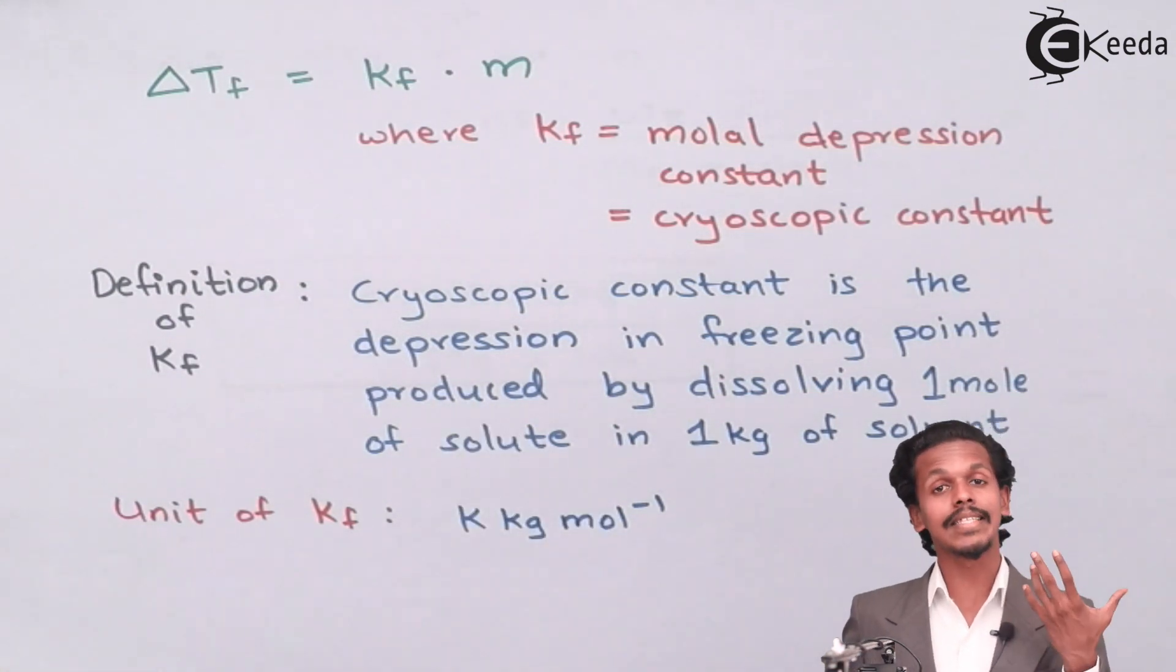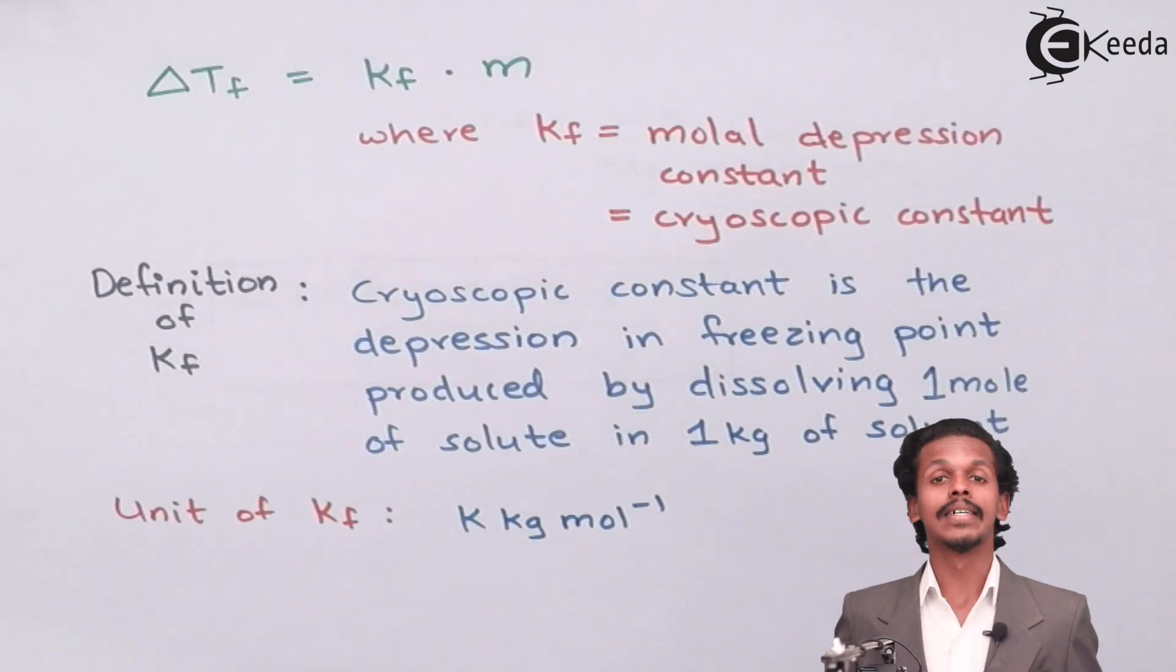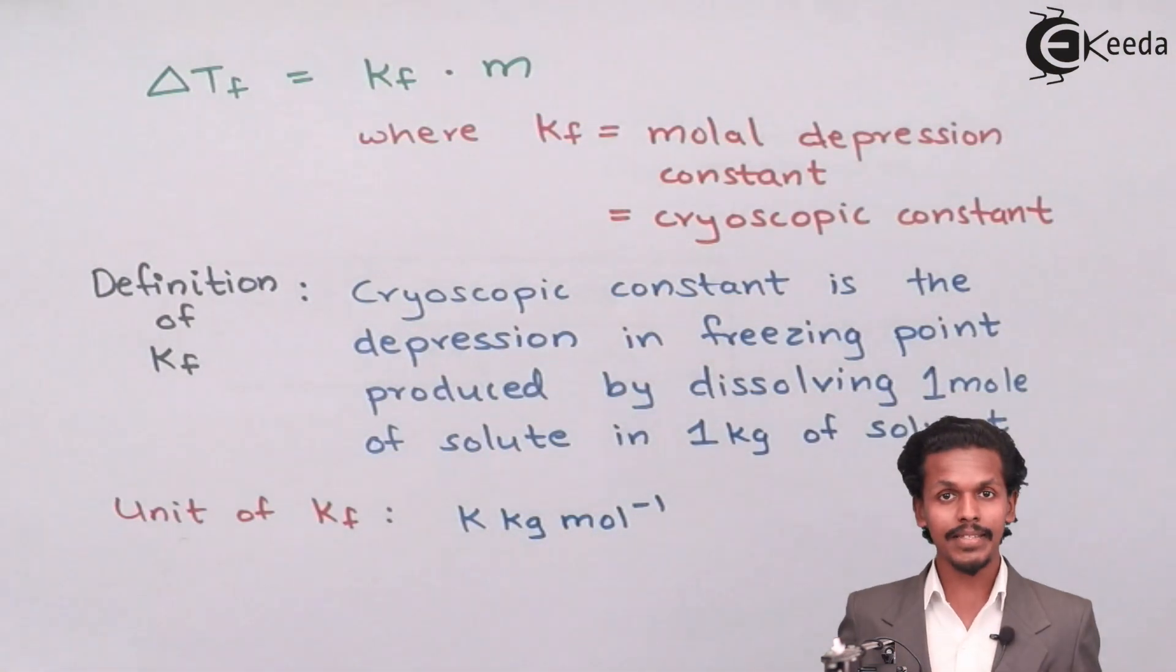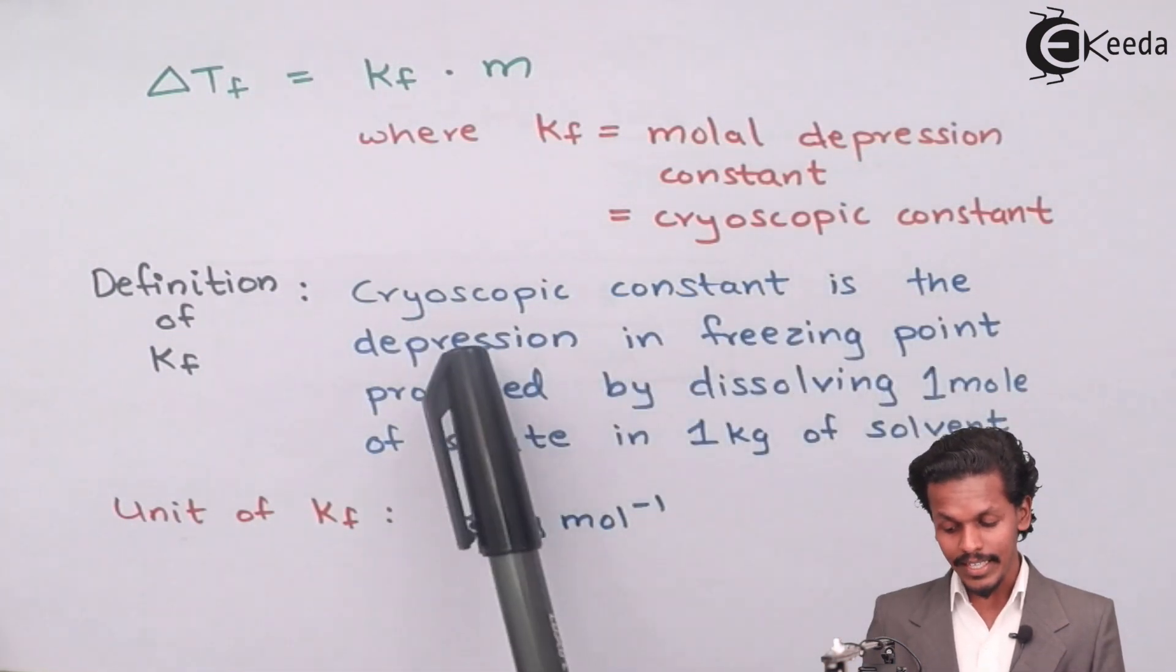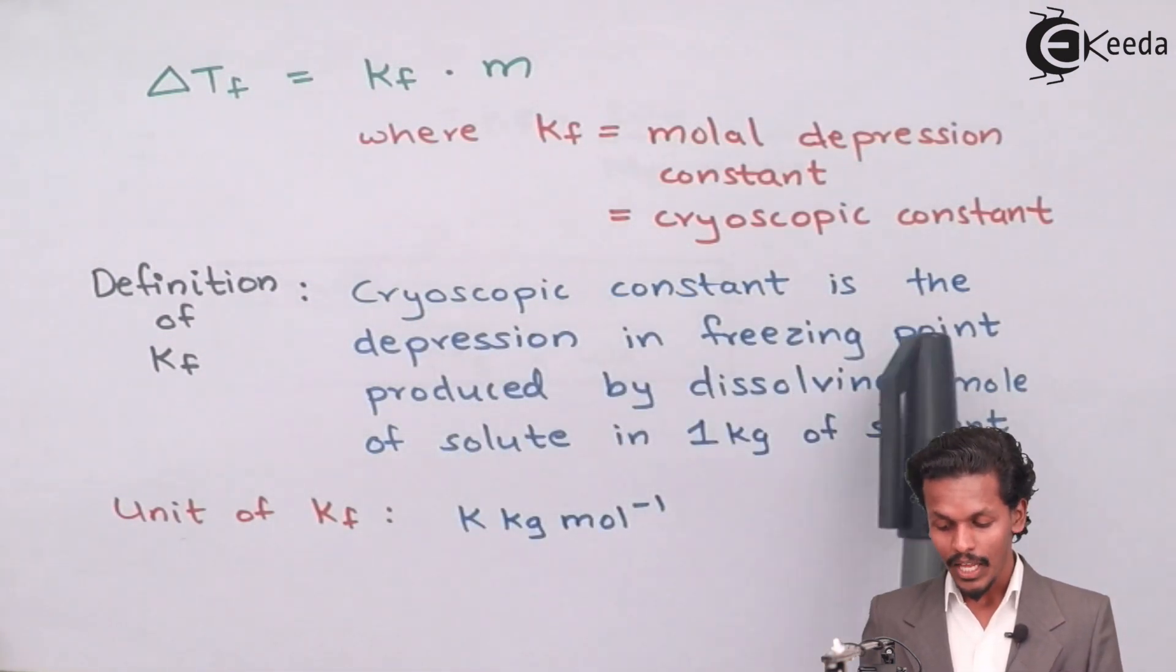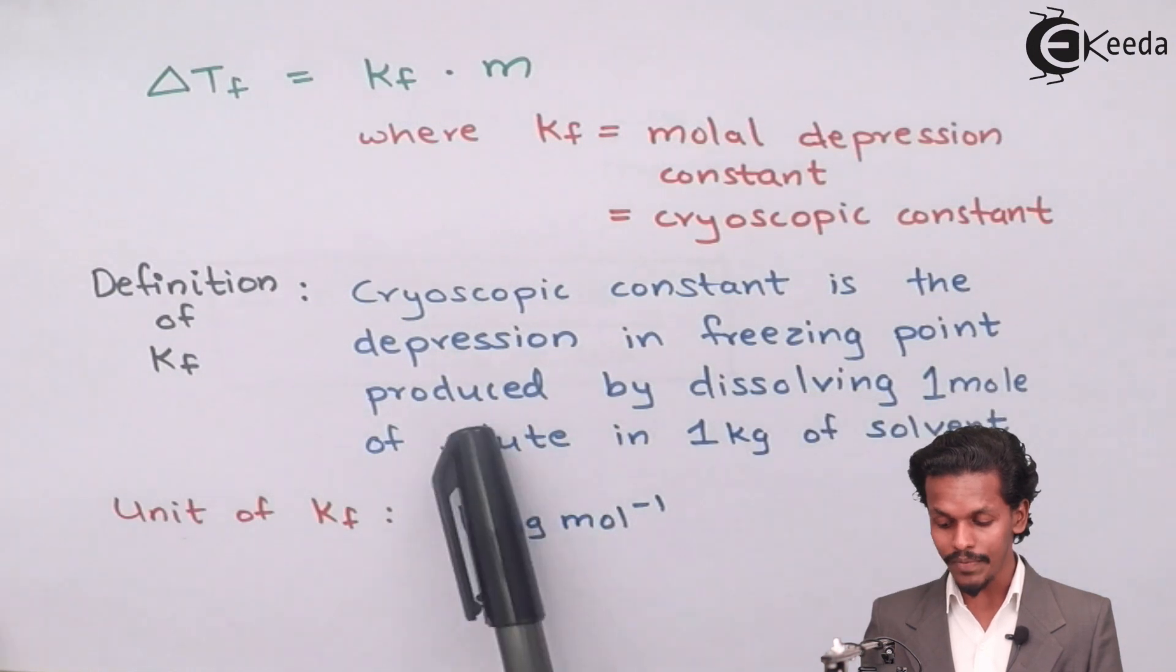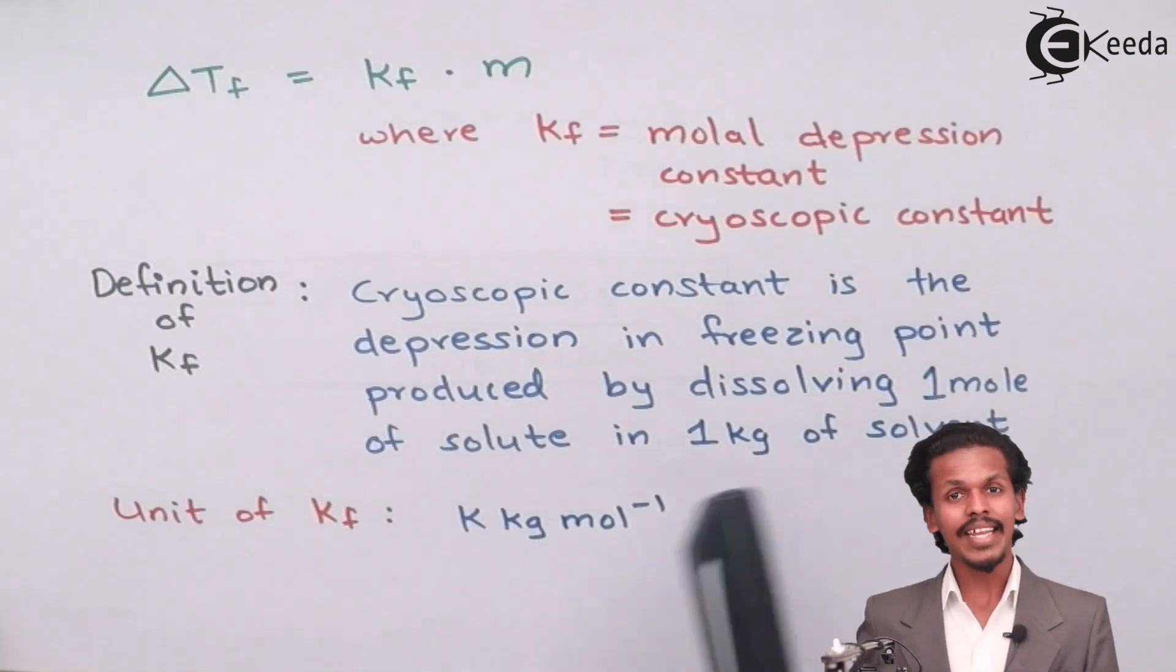And what does this Kf mean or what does this molal depression constant mean? It means the cryoscopic constant is the depression in freezing point produced by dissolving one mole of solute in one kg of solvent. It is very simple.